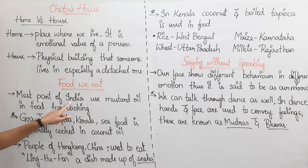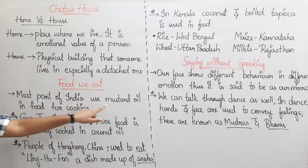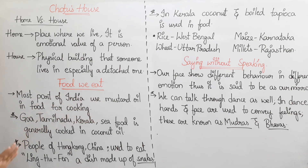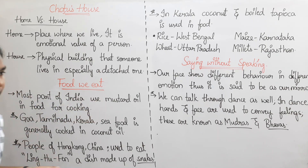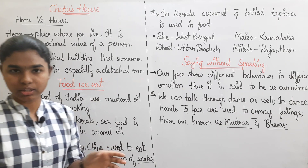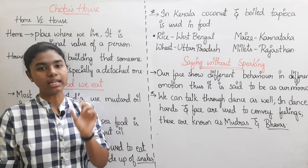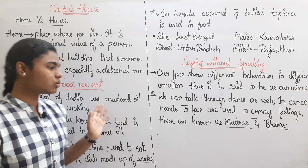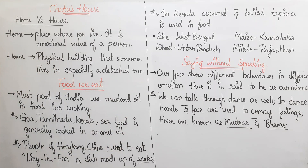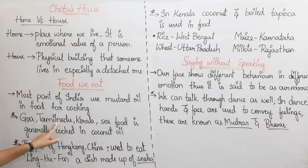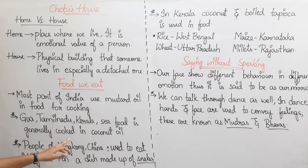Most parts of India use mustard oil in food for cooking. In Tamil Nadu and Kerala, seafood is generally cooked in coconut oil.